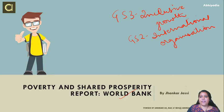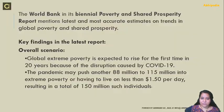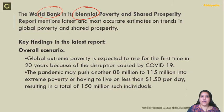There can be a direct question in the mains exam that talks about this report, and this report has relevance with the impact of COVID-19 on the world economy. The World Bank has released its biennial report — a report it releases every two years on poverty and shared prosperity — which mentions the latest and most accurate estimates on trends in global poverty and shared prosperity.